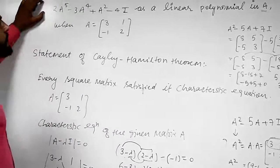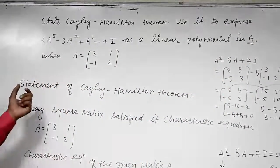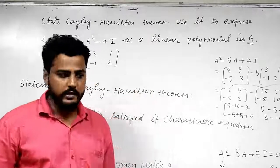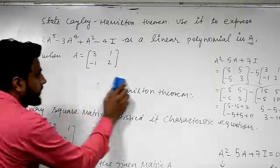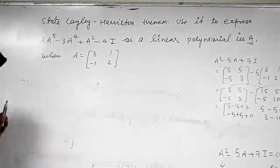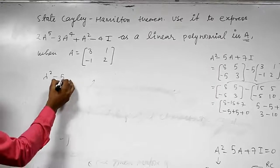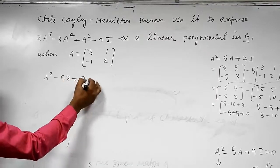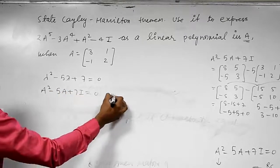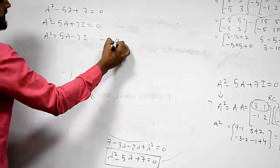Now the second part says to express a given expression as a linear polynomial in A. We have the characteristic equation lambda squared minus 5 lambda plus 7 equals 0. Converting to matrix form: A squared minus 5A plus 7I equals 0. So A squared equals 5A minus 7I. Let this be equation number 1.